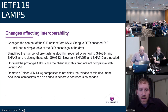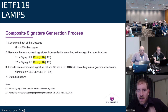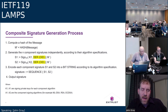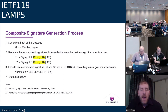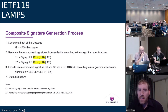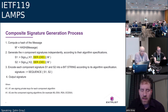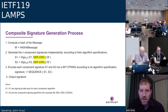This slide shows the message generation process. We pre-hash the message, and then in step two, we take the DER-encoded OID — that's the key change — which is concatenated with the hashed (pre-hashed) message, and you do that for both algorithms to get your signature.